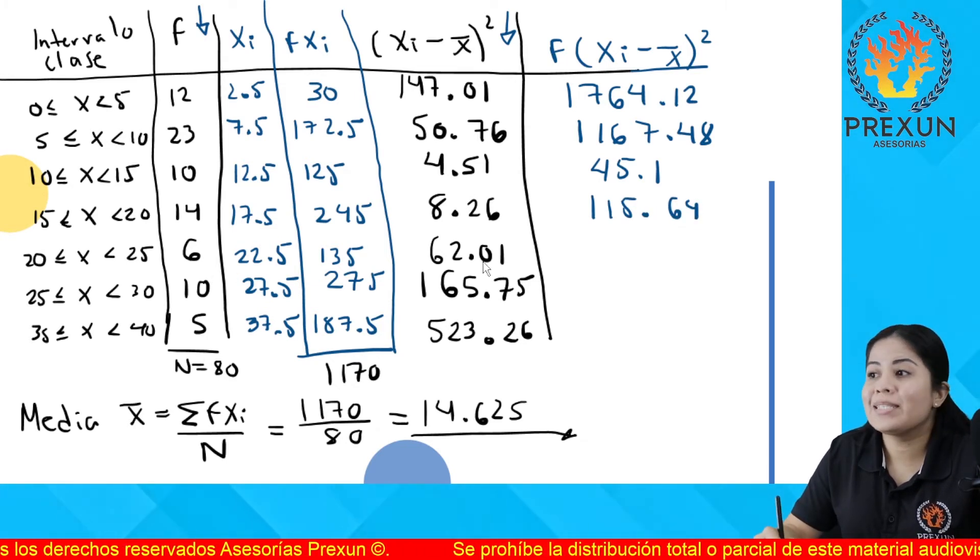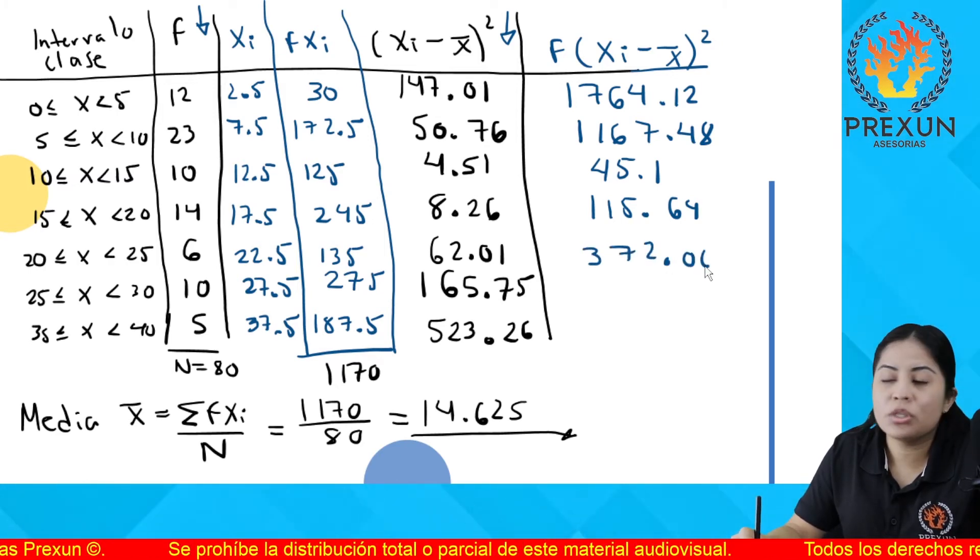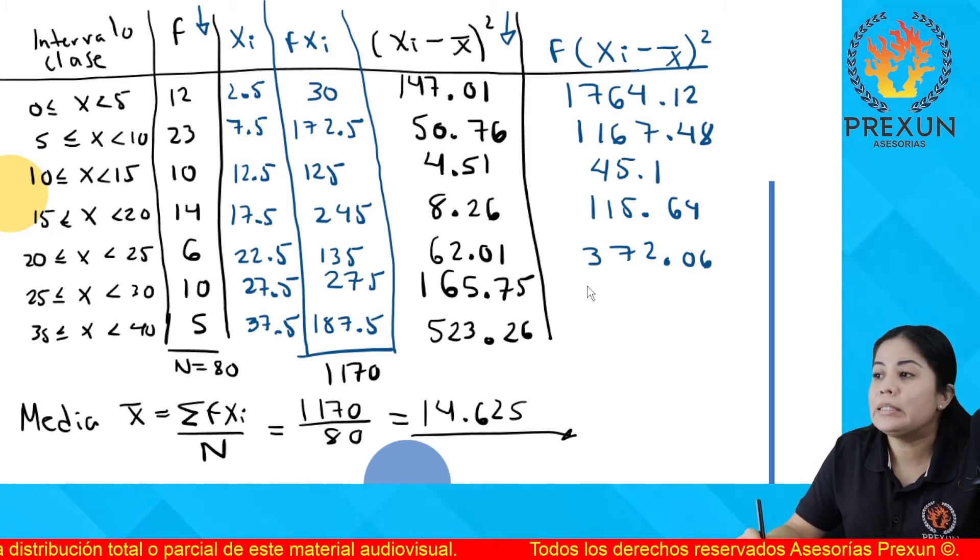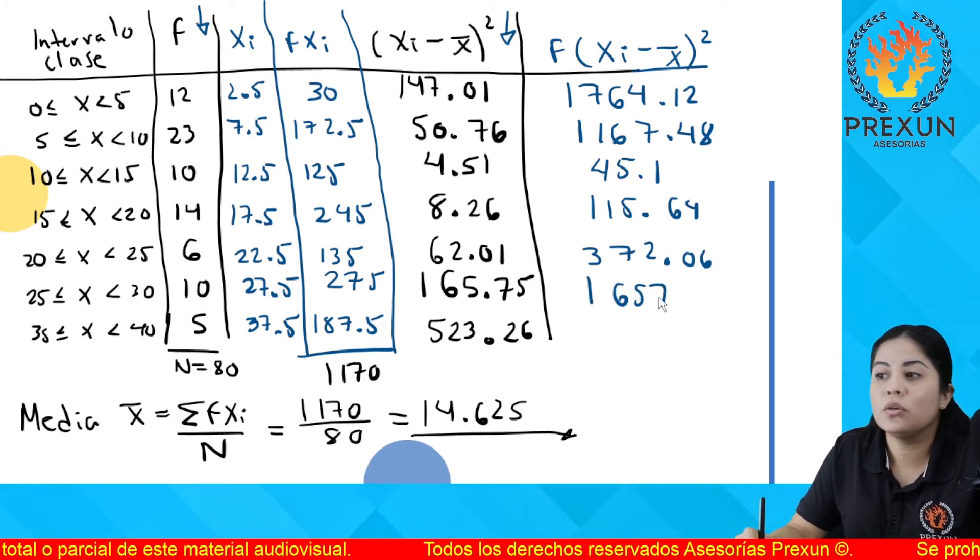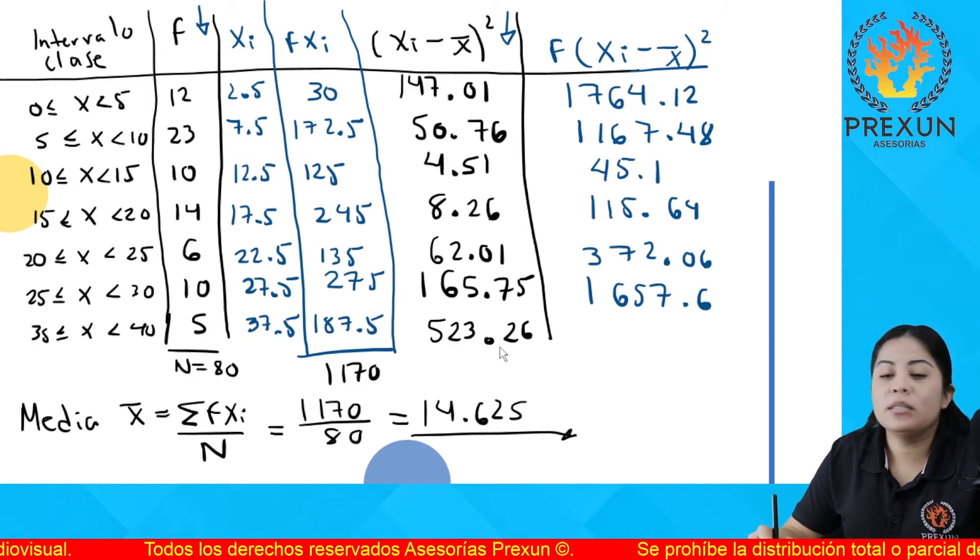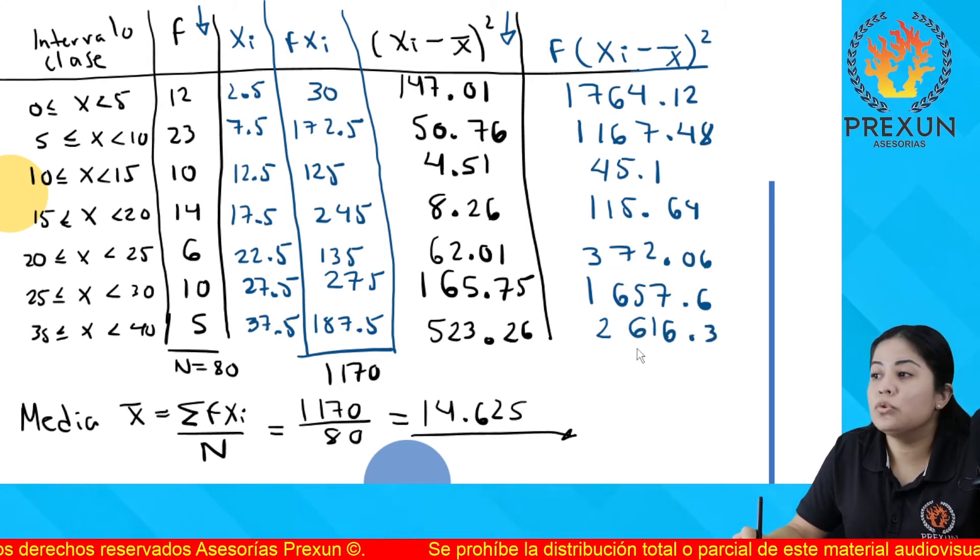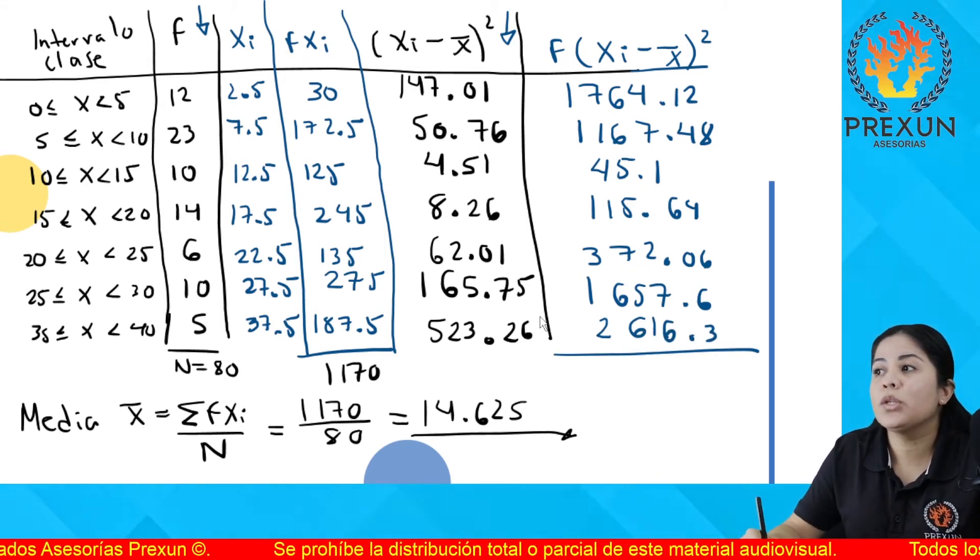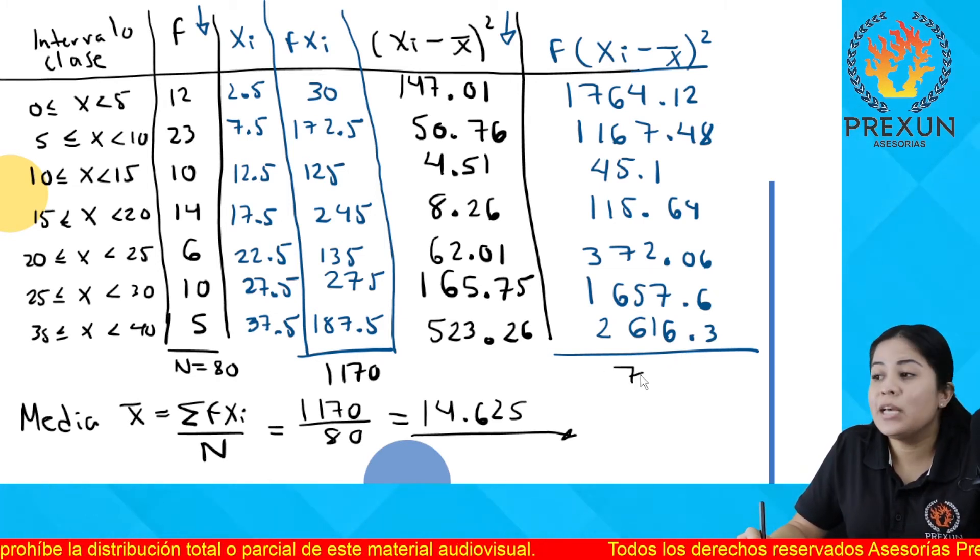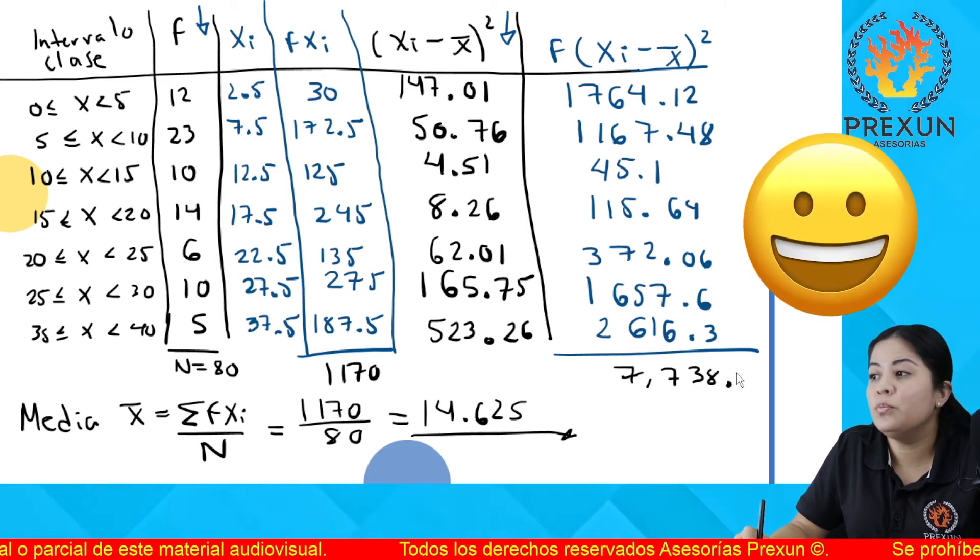10 por 4.51 es 45.1. 14 por 8.26 es 115.64. 6 por 62.01 es 372.06. 10 por 165.75 es 1657.6. Y 5 por 523.26 es 2616.3. Vamos a sumar todos estos resultados obtenidos porque la vamos a utilizar. La suma es de 7,738.3.